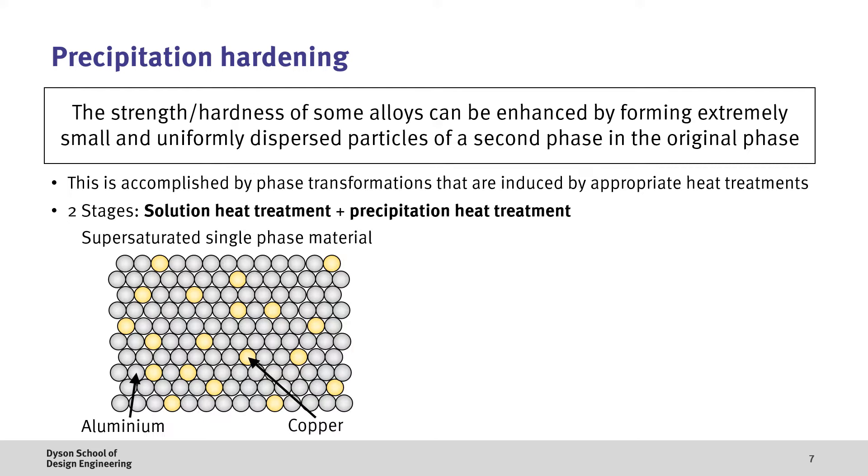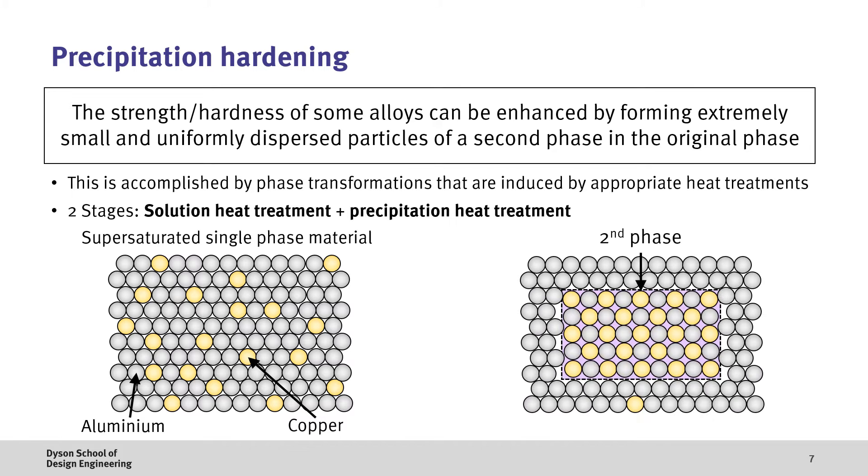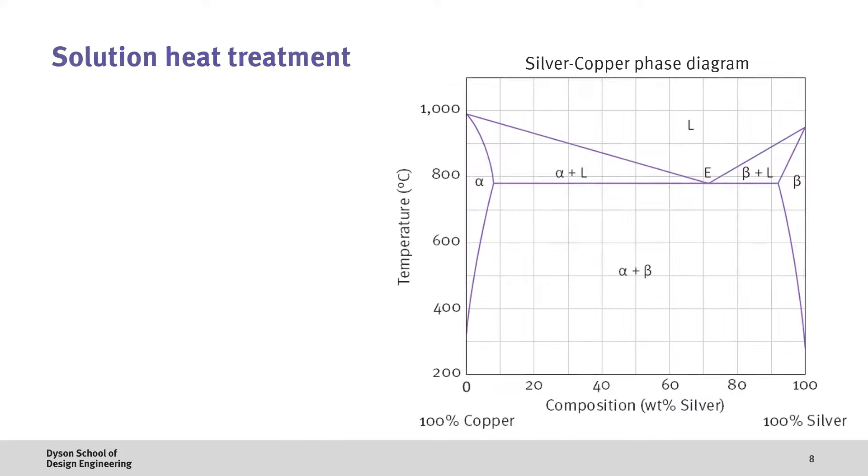Solution heat treatment, where a supersaturated single phase is created by quenching a material rapidly. And a precipitation heat treatment phase, where the material is reheated to allow for the formation of small dispersions of a second phase. Now, let's have a closer look at what's actually going on in this process.